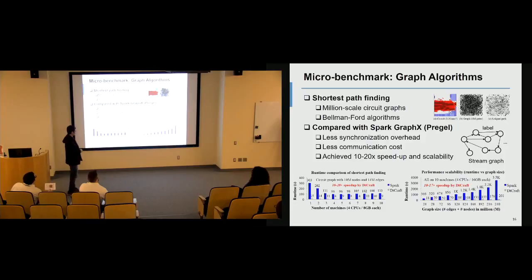We also compare with Spark again on graph algorithms, finding the shortest path on a medium-scale circuit graph. We implement the Bellman-Ford algorithm for distributed graph processing. Again, graph processing is more compute intensive, so you can see the benefit of DTCraft is clear in this case. In terms of performance, DTCraft is more than an order of magnitude faster than Spark. It's about 10 to 20 times faster on this medium-scale circuit graph for finding the shortest path. As we increase the size of the graph, the scalability is even more remarkable. The runtime growth is approximately linear in DTCraft, but the growth in Spark is almost exponential.